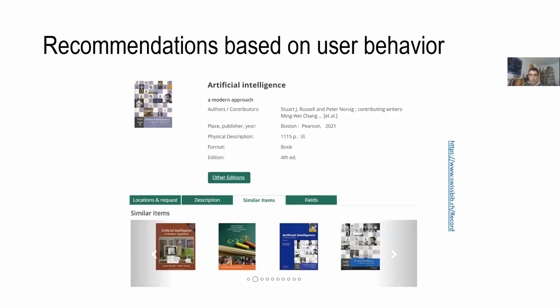We also see some recommendations based on user behavior, just as we see in commercial e-commerce platforms. There's a lot of recommendation functionality out there. Libraries are — I'll get to that — quite hesitant to implement this. The recommendations we have in Germany are based on views: the titles recommended as similar items are mostly those previously viewed by other users, not checked out.